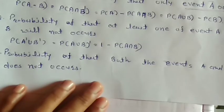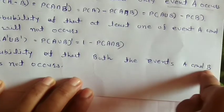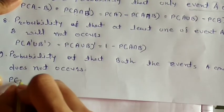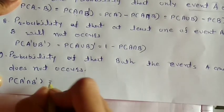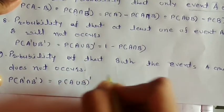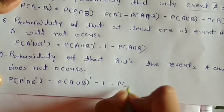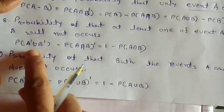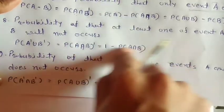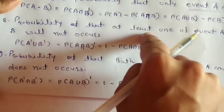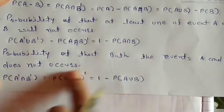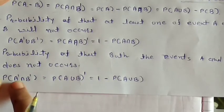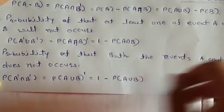Number 9: Probability that both events A and B do not occur — meaning neither event occurs: P(A'∩B') = [P(A∪B)]' = 1 − P(A∪B). Here, since both have dashes in the intersection, the union gets a whole dash, giving us 1 minus P(A∪B).